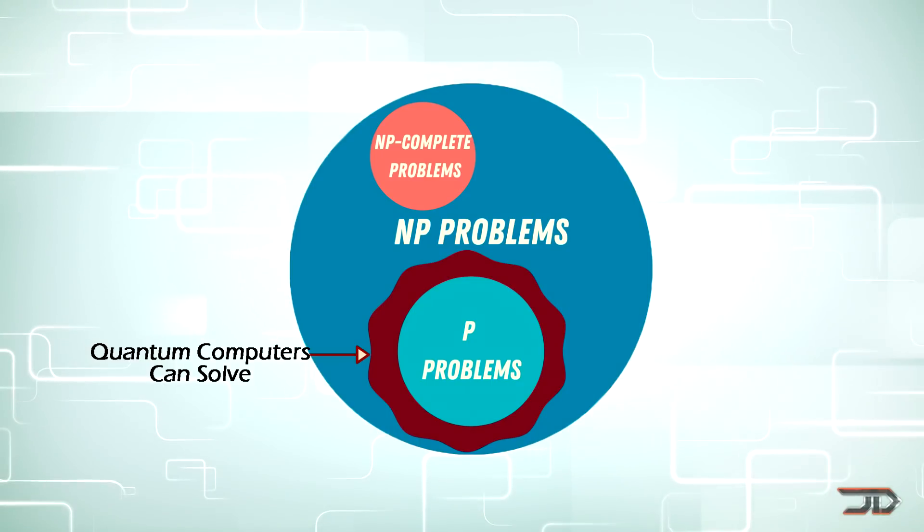These three subsets include problems which classical computers can solve in linear time. Then there's NP, in which solutions are easy to verify but tricky to implement. Then finally we have NP-hard problems which are difficult to solve and no known algorithm has yet to solve this efficiently.